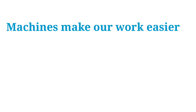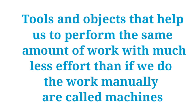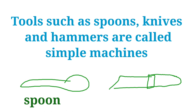Machines make our work easier. Tools and objects that help us to perform the same amount of work with much less effort than if we do the work manually are called machines. Because in our everyday life we have to do a lot of work, machines are important. Tools such as spoons, knives, and hammers are called simple machines.